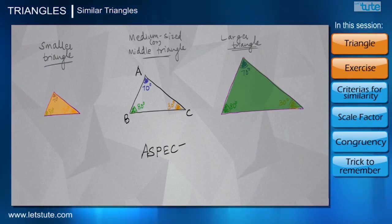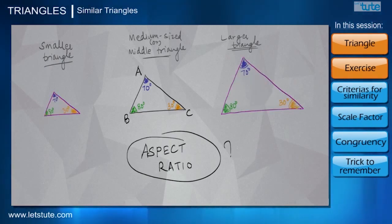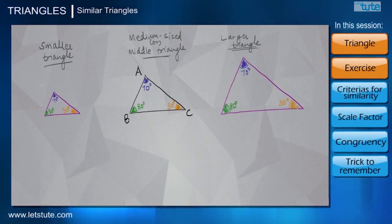And what I mean by aspect ratio is let's say we assign their sides some lengths. So if the smaller triangle is 3, 4, 5, then the medium triangle is 6, 8, 10, and the larger triangle is 12, 16, and 20.